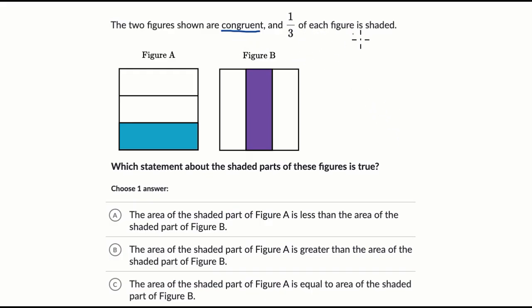Now they also tell us that one-third of each figure is shaded. We can see that in Figure A, it's divided into three equal sections and exactly one of those three equal sections is shaded in.